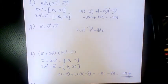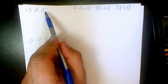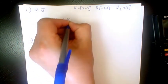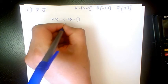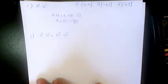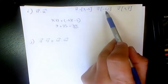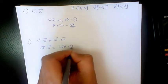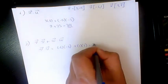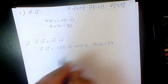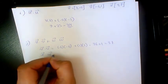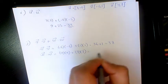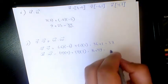Next, u dot u = 3 times 3 plus -5 times -5 = 9 plus 25 = 34. Then v dot v = -6 times -6 plus 1 times 1 = 36 plus 1 = 37. And w dot w = 4 times 4 plus 7 times 7 = 16 plus 49 = 65.